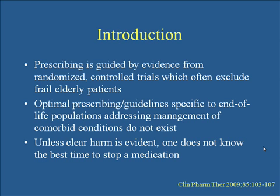Prescribing is guided by evidence from randomized controlled trials. However, many of those exclude frail elderly patients, which can be problematic when we try to apply evidence-based medicine to that population. Guidelines specific to end-of-life populations and management of comorbid conditions just don't exist, which is why we run into problems of treating people all the way to end of life and continuing medications they may not need. If there is clear harm, you stop the medication — but otherwise, the best time to stop is not always known.